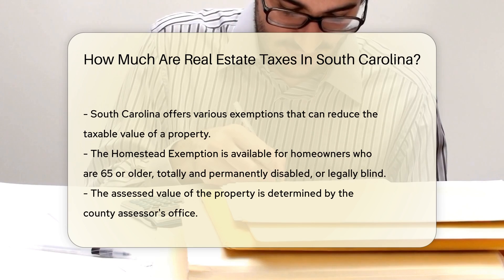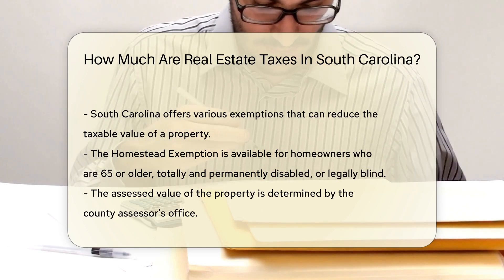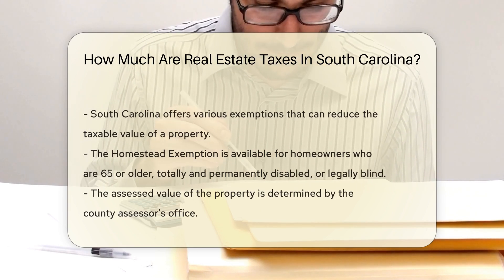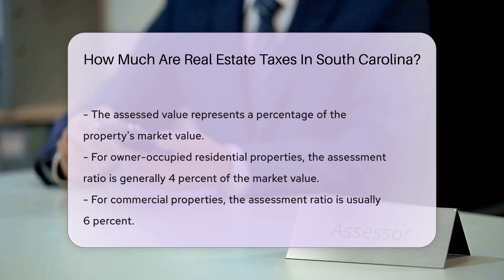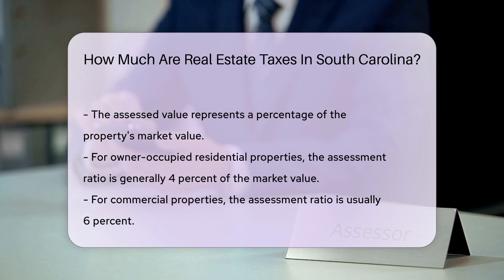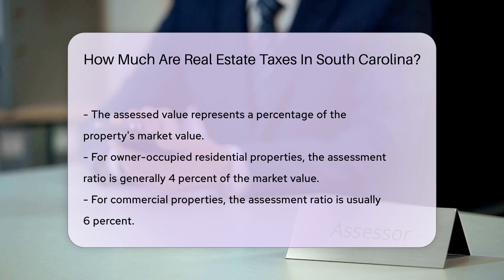This exemption can significantly lower the amount of property tax owed. Moreover, the assessed value of the property is another crucial factor. The assessed value is determined by the county assessor's office and represents a percentage of the property's market value. For owner-occupied residential properties, the assessment ratio is generally 4% of the market value. For commercial properties, the ratio is usually 6%.